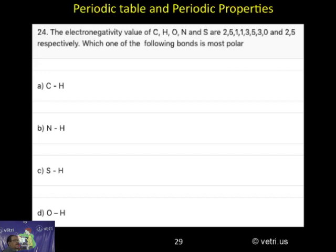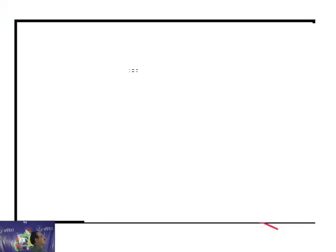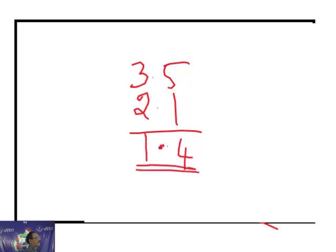Answer D is the correct answer. Because oxygen is 3.5 and hydrogen is 2.1. So the difference is 1.4 according to the Pauling electronegativity scale.